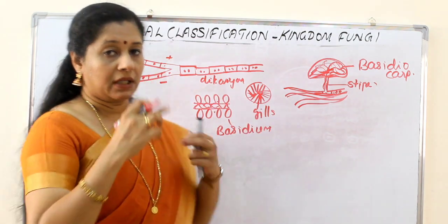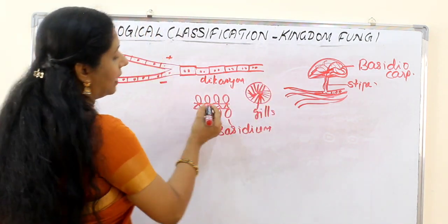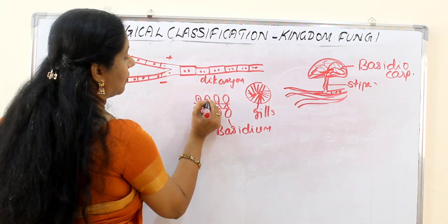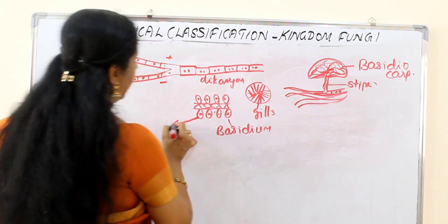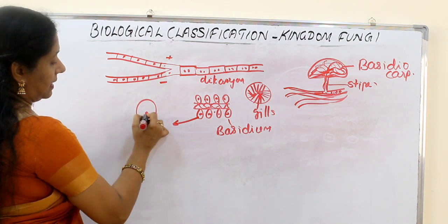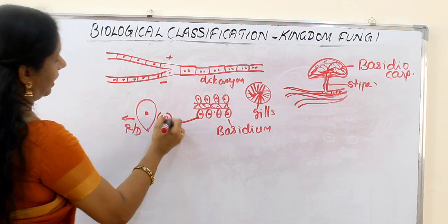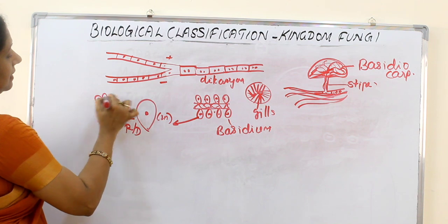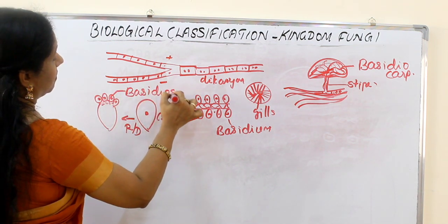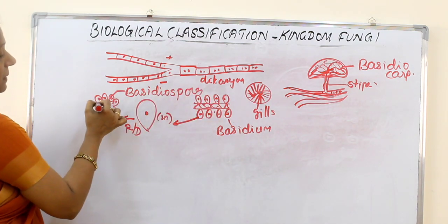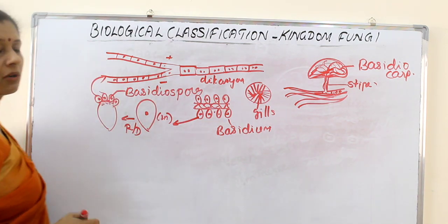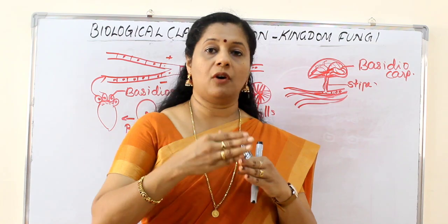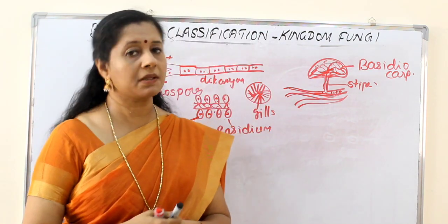Just as in Ascomycetes the end of the hyphae becomes an ascus, here at the edges they form a basidium. Inside the basidium, the dikaryon — the two nuclei — fuse to form a single diploid nucleus. If we enlarge one basidium, it has one nucleus, which undergoes reduction division to give rise to four basidiospores. These basidiospores will detach and grow into new plus or minus hyphae.